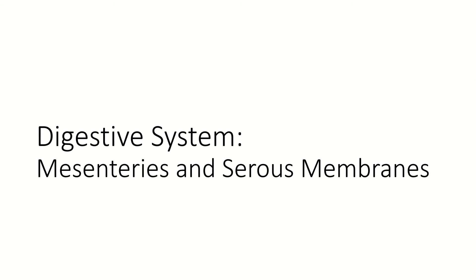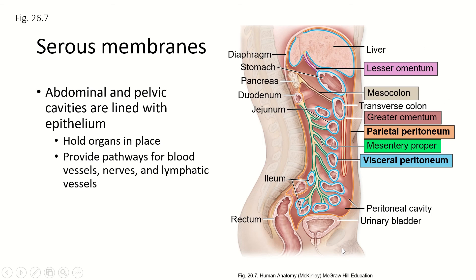For this next section, we're going to talk about what we call the mesenteries and the serous membranes. This is a sagittal section through the body showing all of the serous membranes, which include the mesenteries. These membranes surround everything in the abdominal cavity, surround the abdominal cavity itself, surround all of the organs, and hold everything in place. The mesenteries especially provide pathways for the blood vessels, the lymphatic vessels, and the nerves that supply all of these organs in the abdominal cavity.